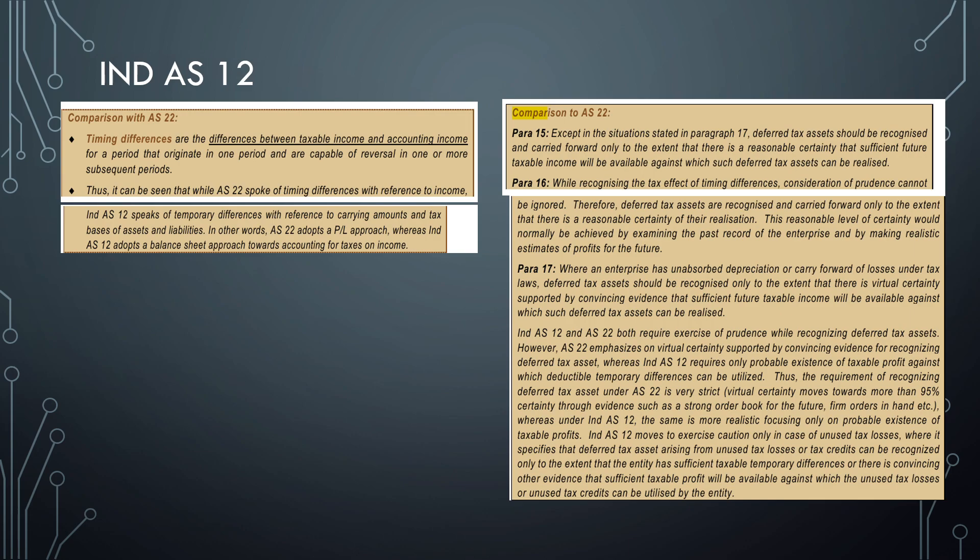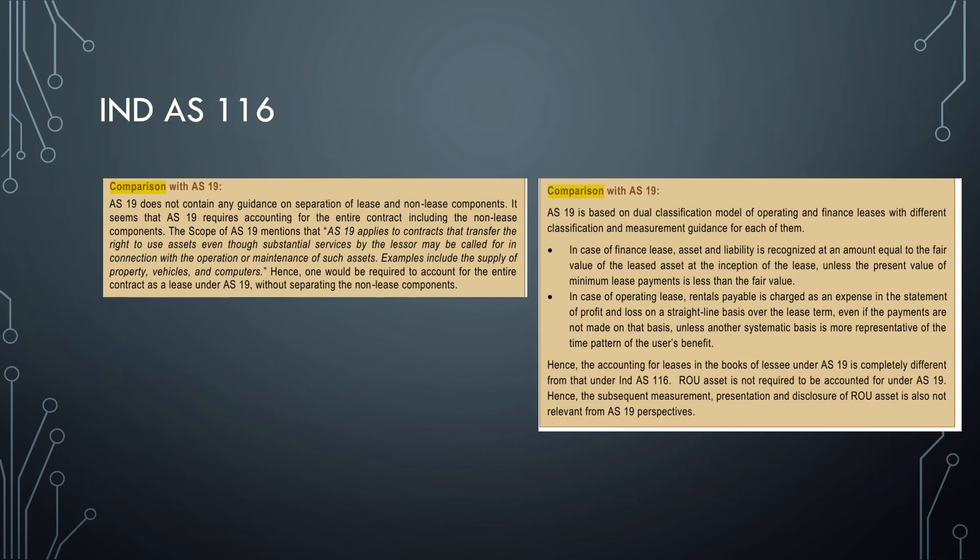And also in Para 16, we are talking about conservatism - prudence cannot be ignored. DTA recognized only to the extent there is reasonable certainty of realization. So IND AS 12 and AS 22 both require exercise of prudence, but IND AS 12 requires only probable existence of taxable profit against which it can be set off. The requirement for recognizing DTA is very strict - that is virtual certainty - but IND AS 12 is not that harsh. This is basically the difference between IND AS 12 and AS 22.